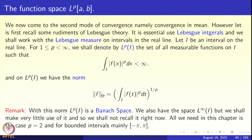With respect to this Lp norm, Lp of I is a Banach space. We have to show that if f and g both satisfy this integrability condition, then f plus g will also satisfy it, so Lp of I is a vector space. The triangle inequality is the non-trivial part. Then one must show that with respect to this norm, it is a complete normed space — every Cauchy sequence converges. This is done in standard courses on measure theory and is called the Riesz-Fischer theorem.